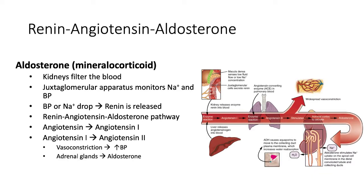Angiotensin 2 has multiple functions. First, it's going to cause widespread vasoconstriction of the arterioles throughout the body. As the overall volume of blood vessels decreases due to vasoconstriction, this raises the blood pressure. Angiotensin 2 also acts on the cortex of the adrenal gland, triggering it to release the hormone aldosterone.